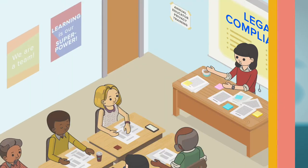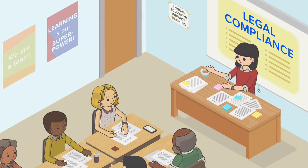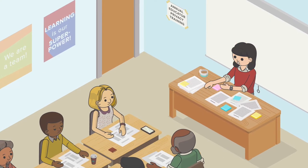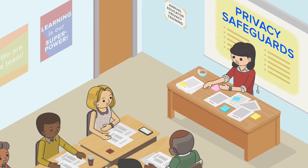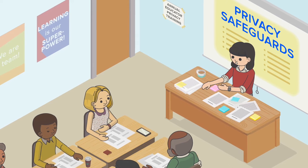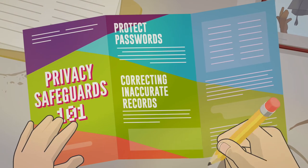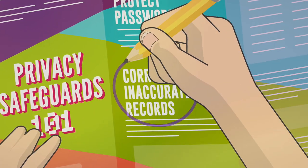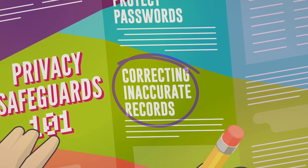Legal compliance alone is not enough to decrease every privacy and security risk, so schools need to adopt additional safeguards. Creating basic privacy safeguards in your school might be easier than it seems — there's a lot of low-hanging fruit.